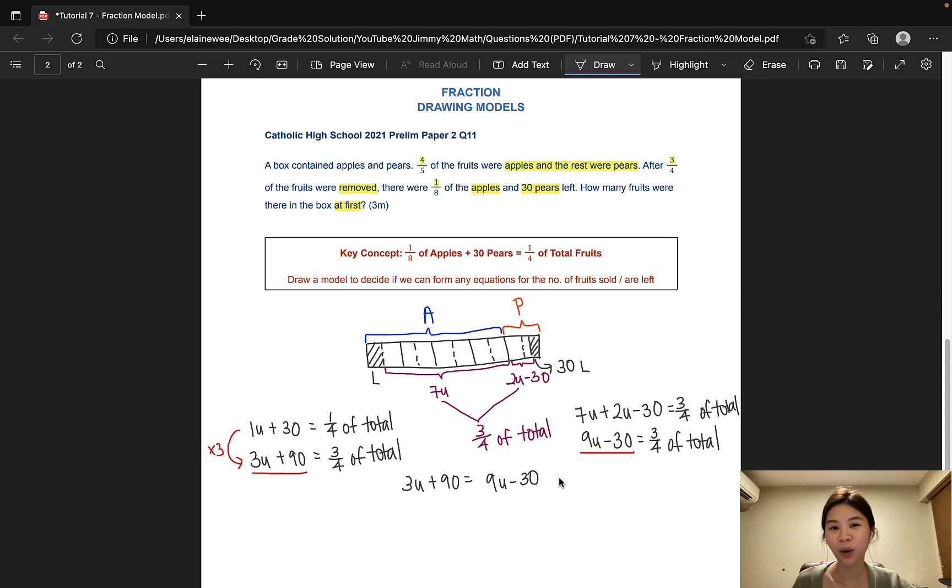Now, at this point, it gets a little bit tricky because at P6, the students have not learned to change the sign from plus to minus or from minus to plus when we change sides. That is a skill that they learned in sec one. So how do we explain this to primary six students? We draw another model.